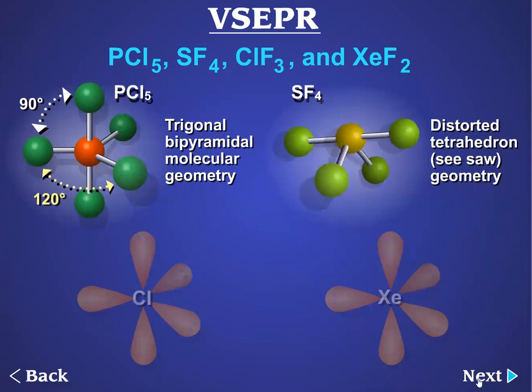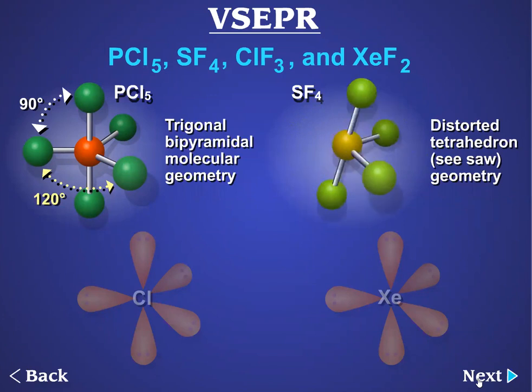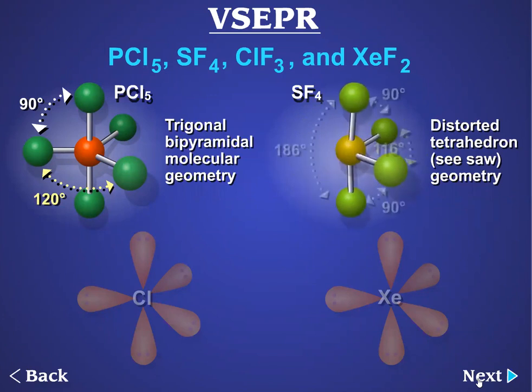Due to the lone pair, the sulfur-fluorine bonds are pushed together, and the bond angle in the equatorial plane is less than the typical 120-degree angle.